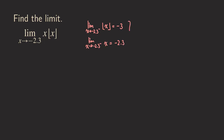Putting them together using the limit laws, the left-side limit of x times the floor function of x is negative 2.3 times negative 3, which gives us positive 6.9. So that's the one-sided left-hand limit.